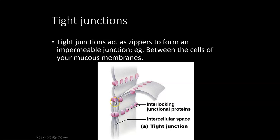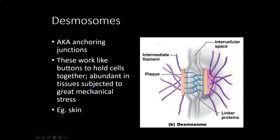Tight junctions are expensive, so you only make them where you absolutely need them. Desmosomes are cheaper from an energy standpoint. My analogy is they work more like buttons — you can stick your hand between the buttons, so materials can pass between cells. But at the button itself, cells are held together pretty well. Most of your cells are held together with desmosomes because they are cheap but still strong.